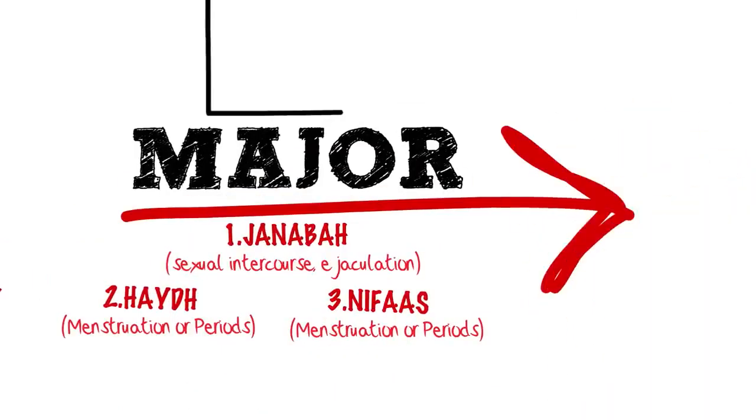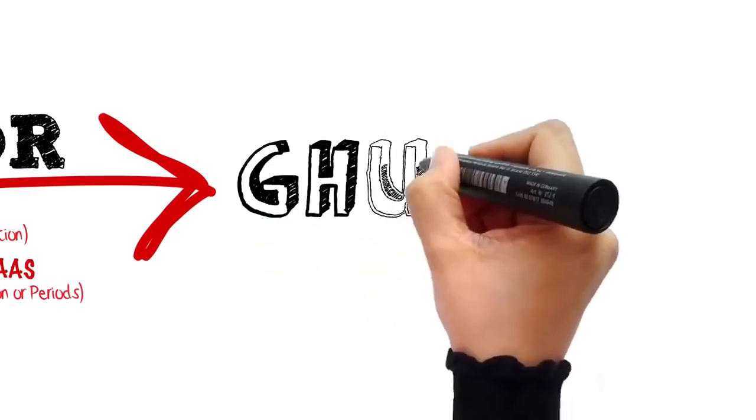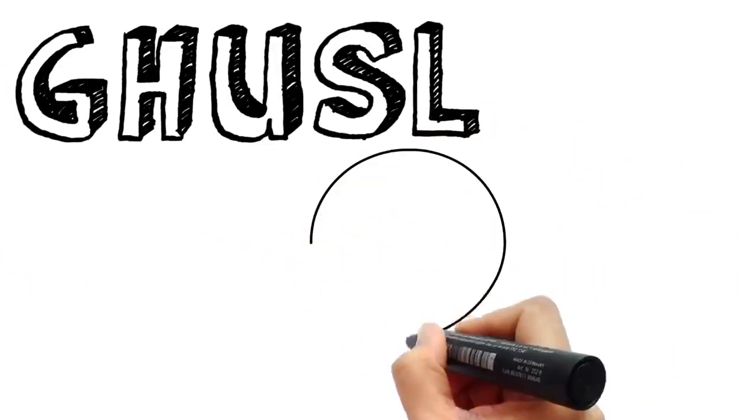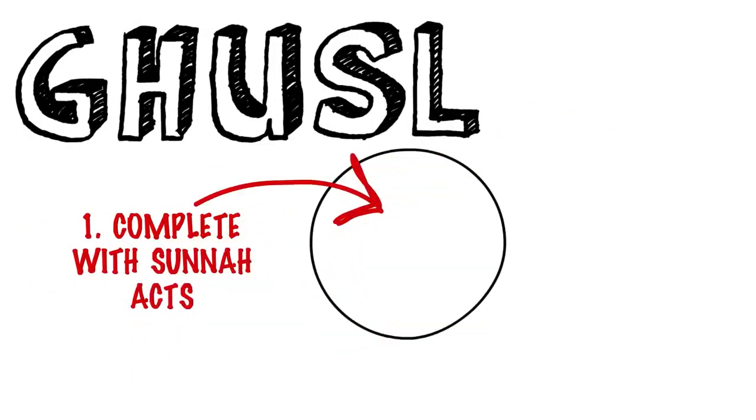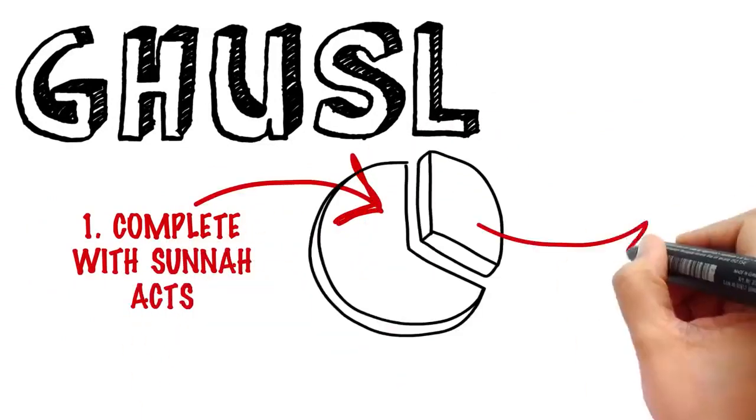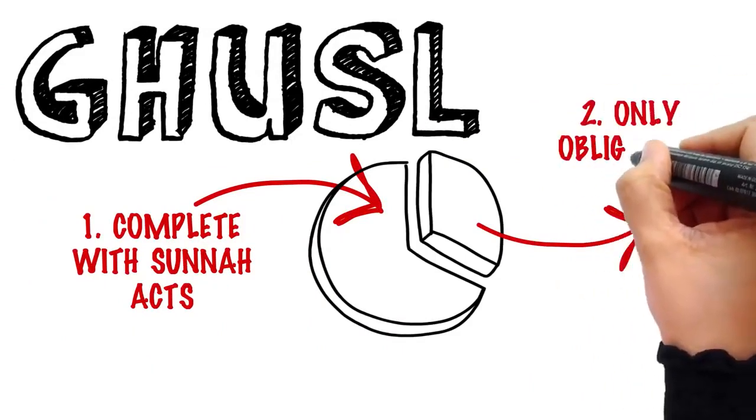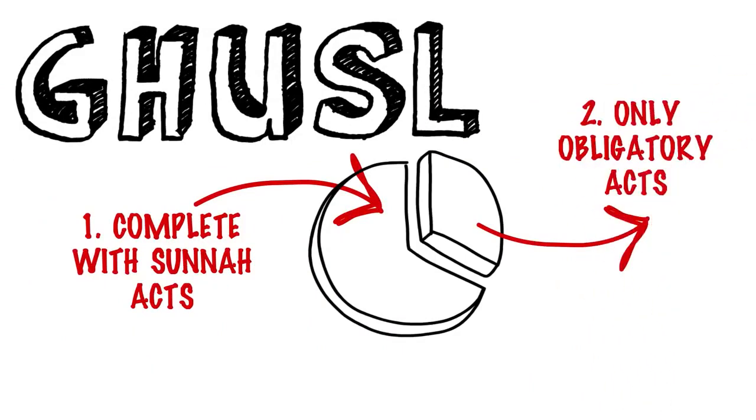Ghusl can be taken in two ways: a complete ghusl with all the sunnahs of the Prophet, and a partial or sufficient ghusl, which means only doing what is obligatory to free yourself from the ritual impurity.